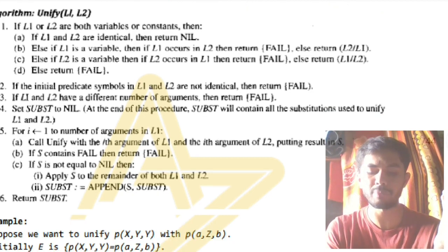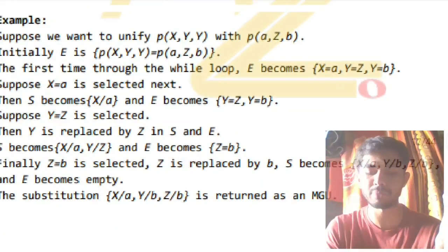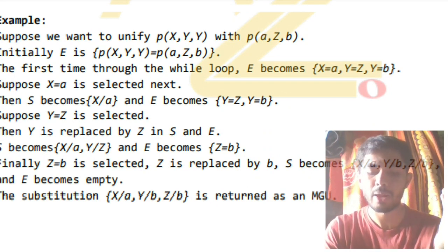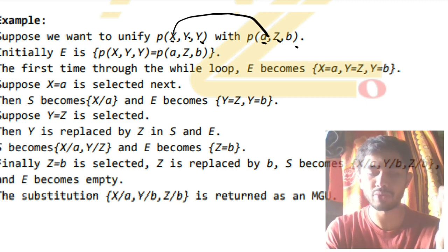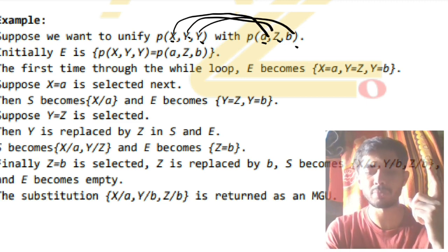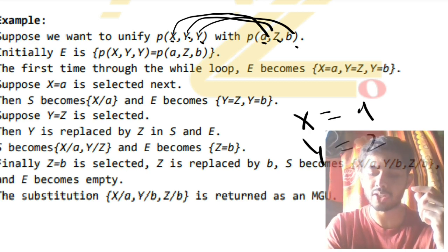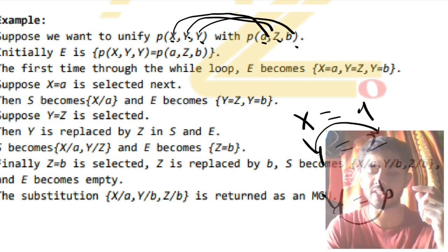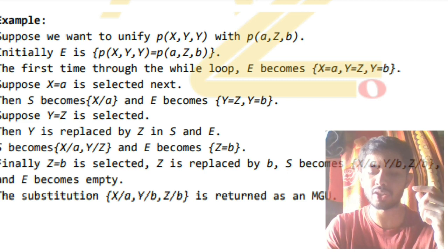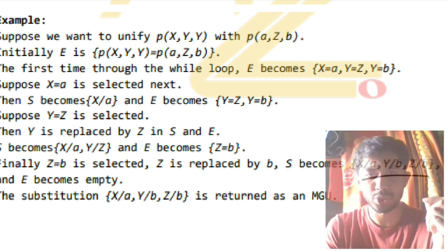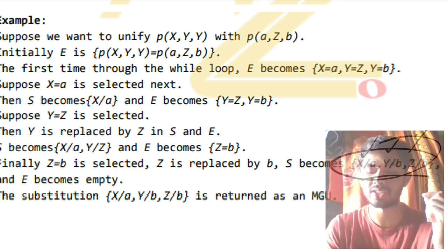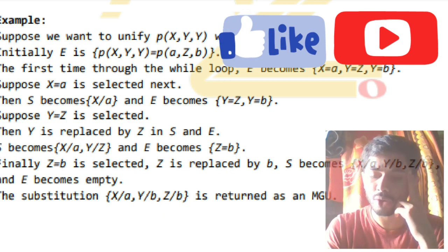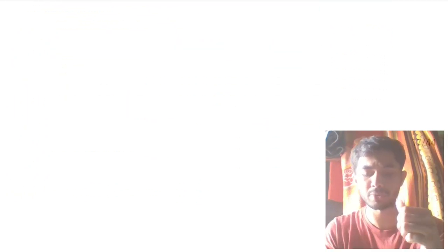If there are many possible substitutions, choose the most general one — the most general unifier (MGU). For the example: given p(x, y, y) and p(a, z, b), matching gives x=a, y=z, y=b. Since y=b and y=z, z also becomes b. The final MGU is {x=a, y=b, z=b}. Write this in formal notation. That's all for Module 2 — like and subscribe for more videos.